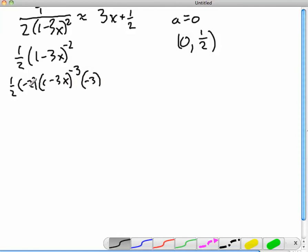Now when I multiply negative 2 times the 1 half, I get negative 1. Negative 1 times the negative 3 is positive 3, so this simplifies down to 3 times (1 minus 3x) to the negative 3.